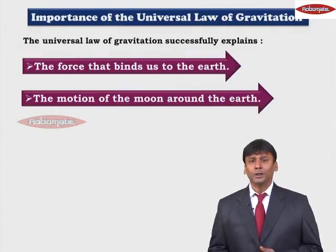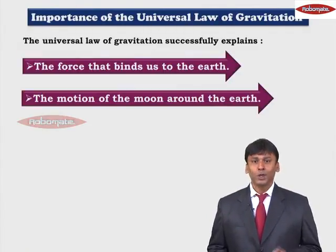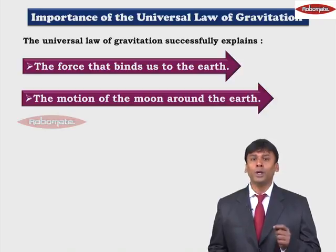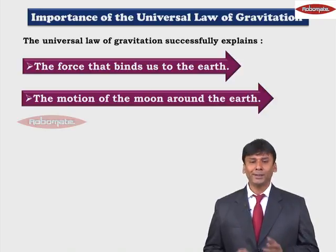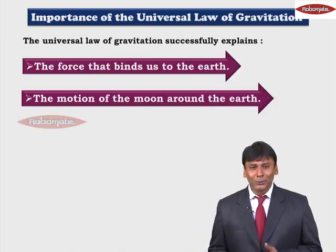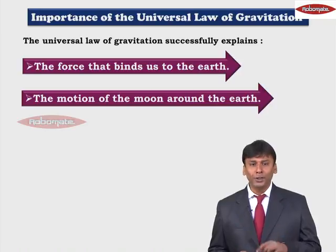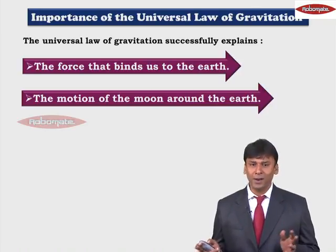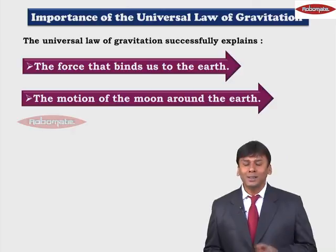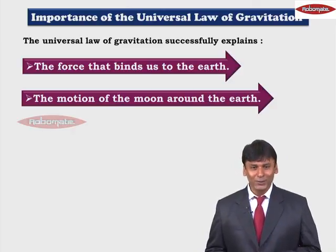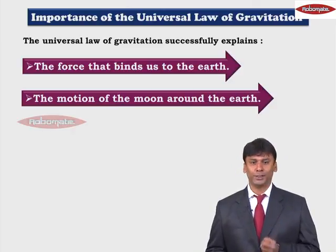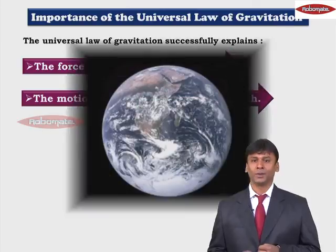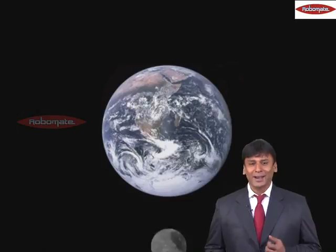The second thing Newton's Law of Gravitation explained was the motion of the moon around the earth. Why is the moon simply going round and round the earth? Why doesn't it go off into space here and there? It is because the earth's gravitational force binds the moon to it. So this also is understood from Newton's Law of Gravitation.